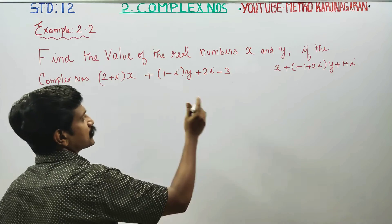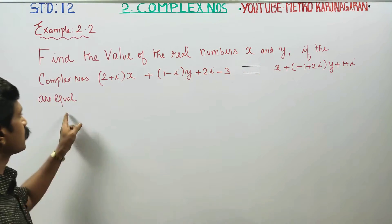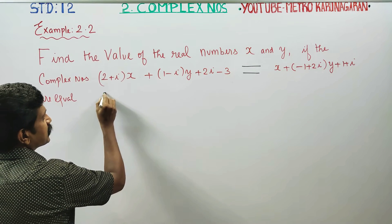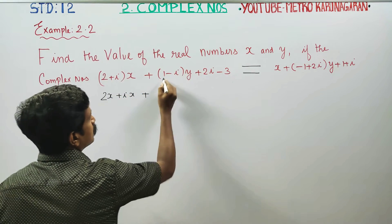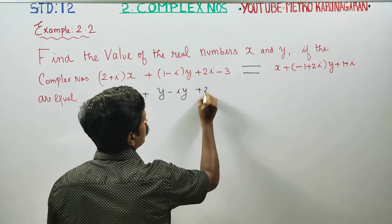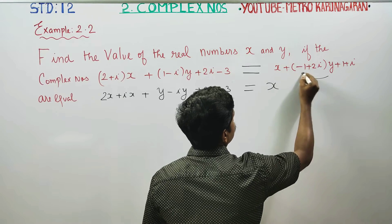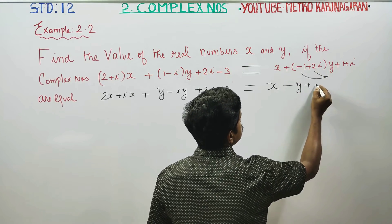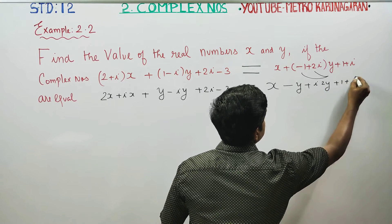In the two expressions, just put an equal symbol. Now expanding: 2x plus ix, y all the time — 1 into y is y, plus iy, plus 2i minus 3, is equal to x, y all the time minus y, plus i into 2y plus 1, plus i.